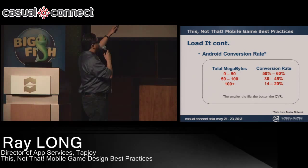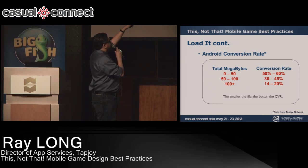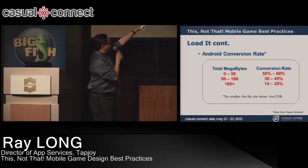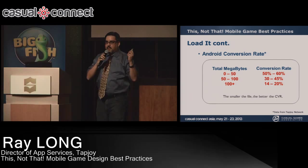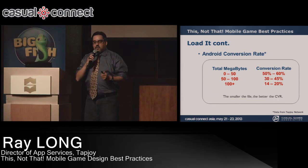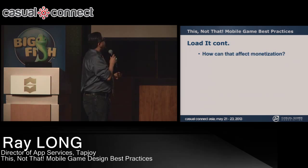Here are some numbers for Android from the Tapjoy network. Downloads 0 to 50 megs: 50 to 60% conversion rate. 50 to 100 megs: 30 to 45%. 100 megs plus: 14 to 20%. If only 14% of the people who go through the trouble to find, discover, and tap to install your game actually open it, then you're not going to win.